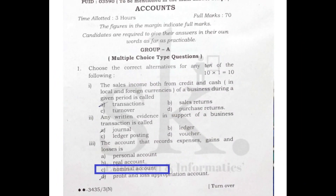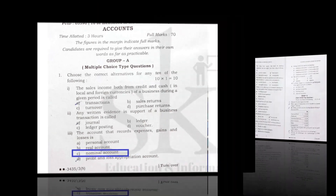Question number three: the account that records expenses, gains, and losses — as per the golden rules of accounts, nominal account records expenses and losses on the debit side, and income and gains on the credit side. So the account that records expenses, gains, and losses is a nominal account. The correct option is C.